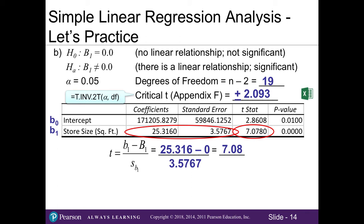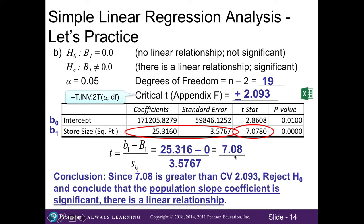Now we compare our information to make a decision. With the critical value method, we compare our t-test statistic of 7.08 to our critical value of 2.093. Because 7.08 is greater than 2.093, it falls in the rejection region in the tail, so we reject the null and can conclude that the population slope coefficient is significant — there is a linear relationship. When our decision is to reject the null, I suggest crossing out the null statement and only interpreting what's left: our alternative states there is a linear relationship and it is significant.